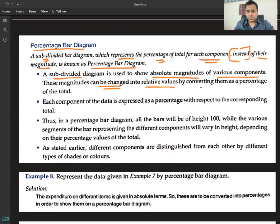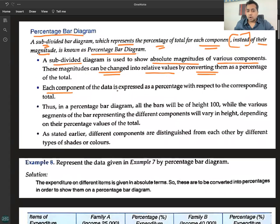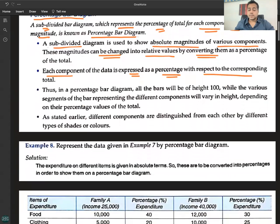These magnitudes can be changed into relative values by converting them as a percentage of total. Each component of the data is expressed as a percentage with respect to corresponding total.